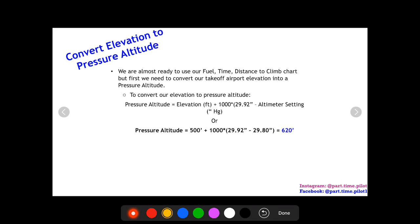Moving on, so the first thing we got to do is our airport elevation is not in terms of pressure altitude, but our cruise altitude is in terms of pressure altitude. So we need to have those both in terms of pressure altitude to be able to use our fuel, time, and distance to climb chart correctly.